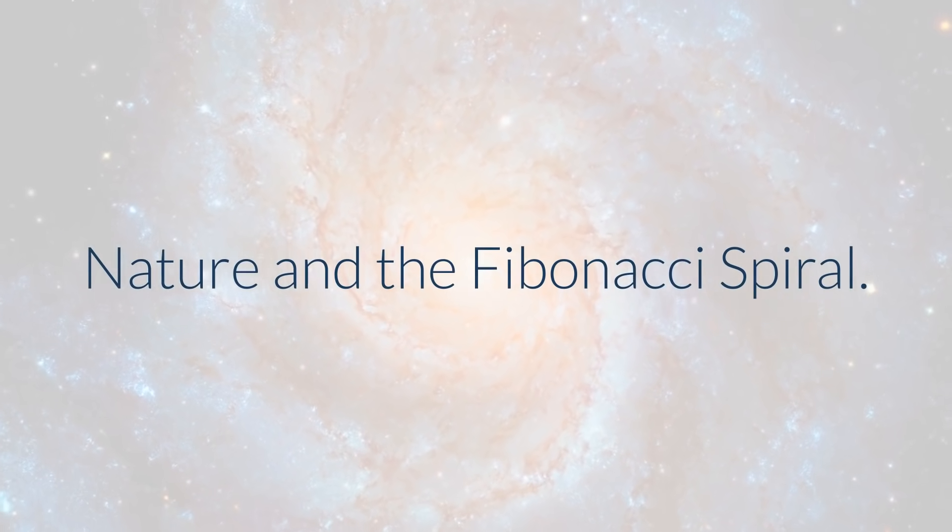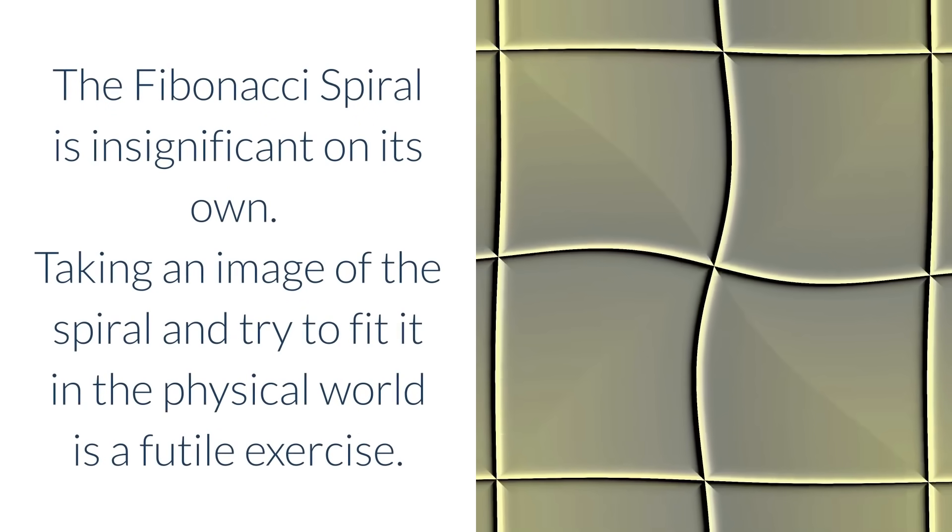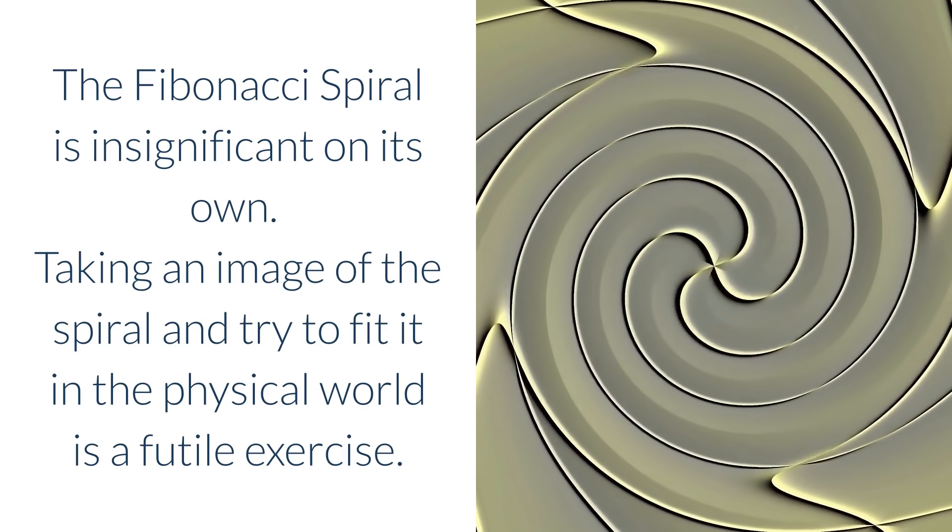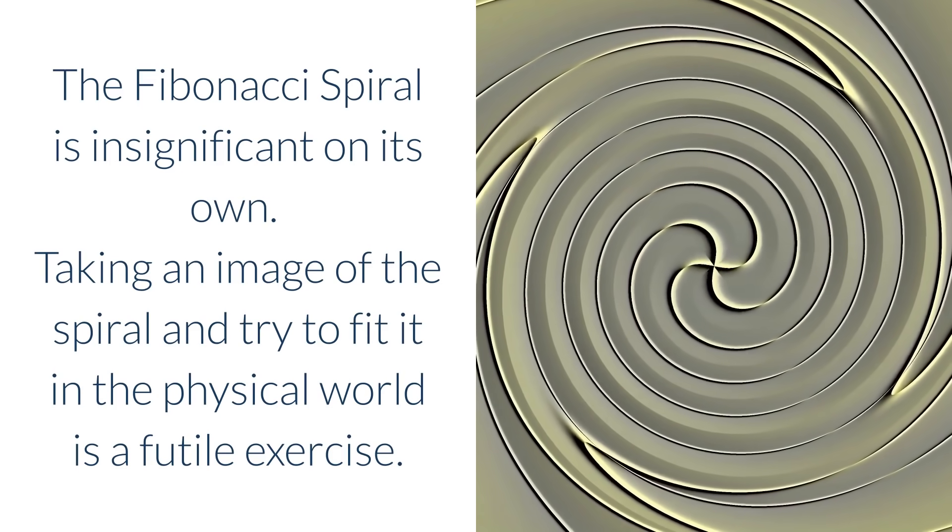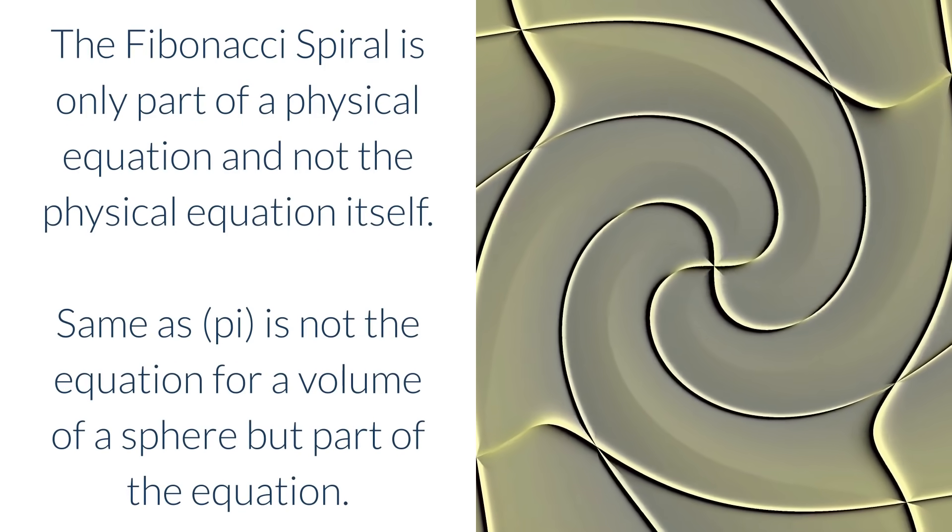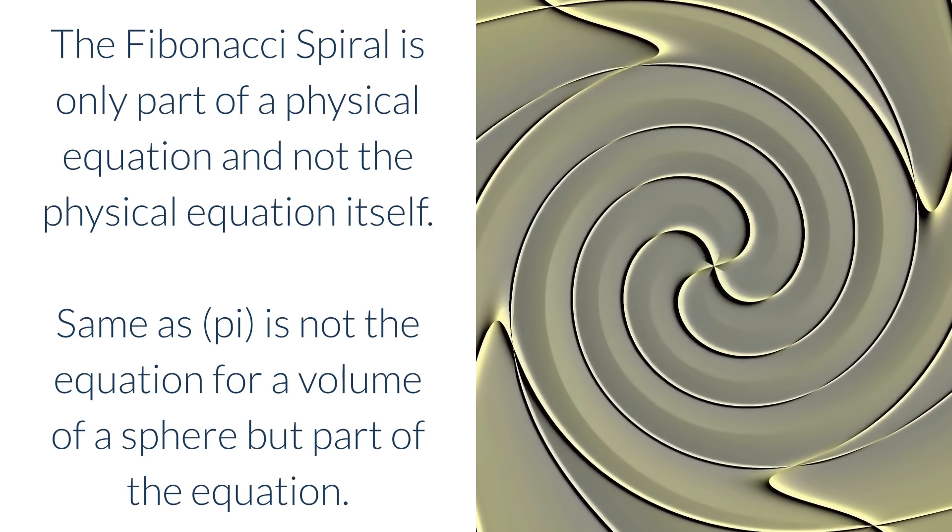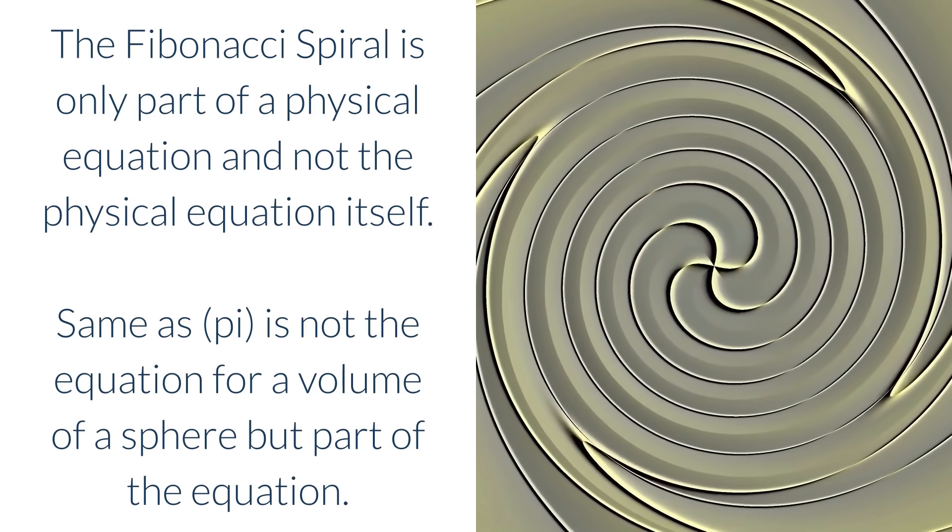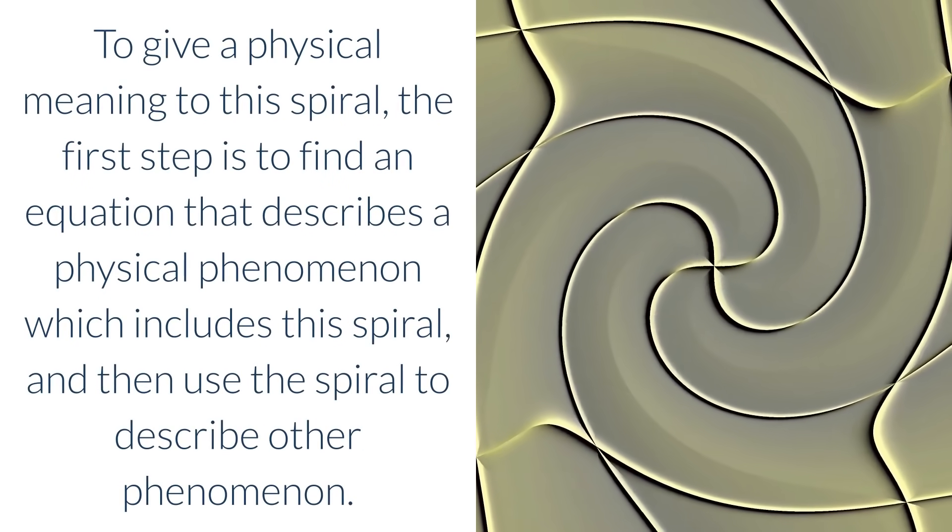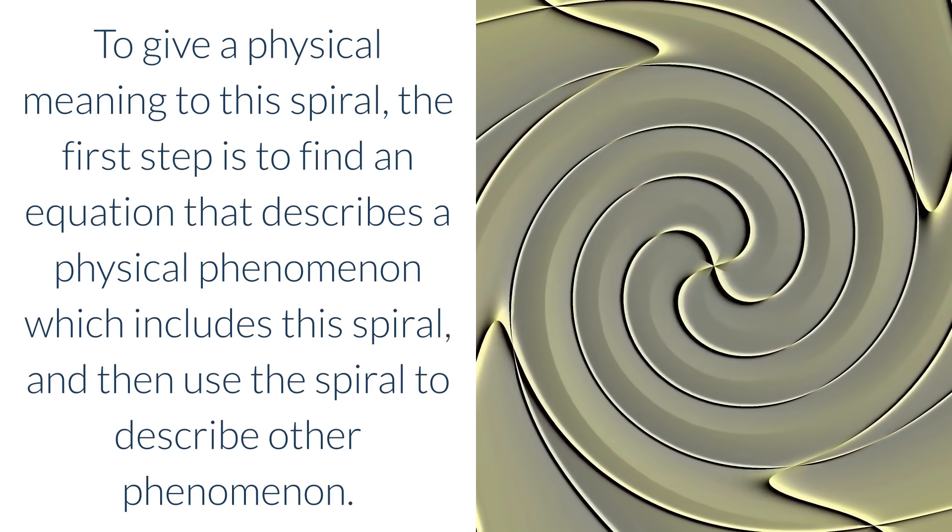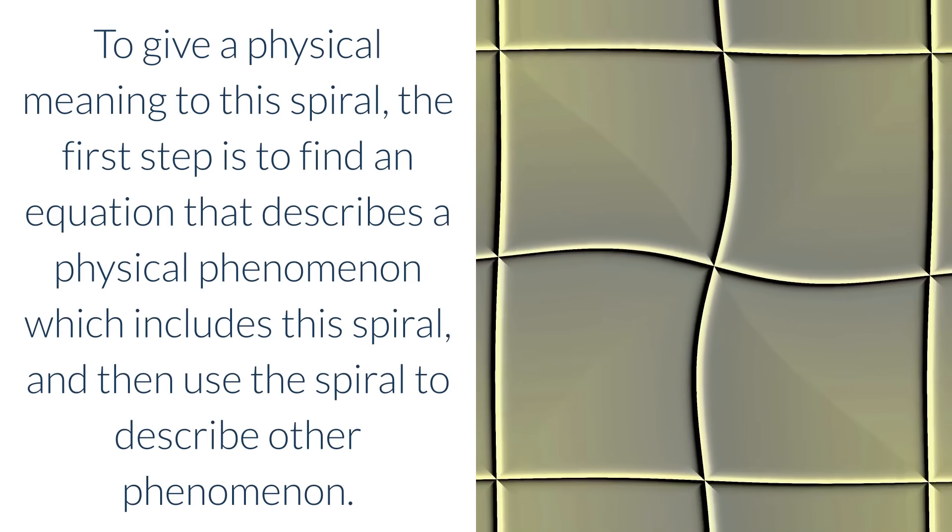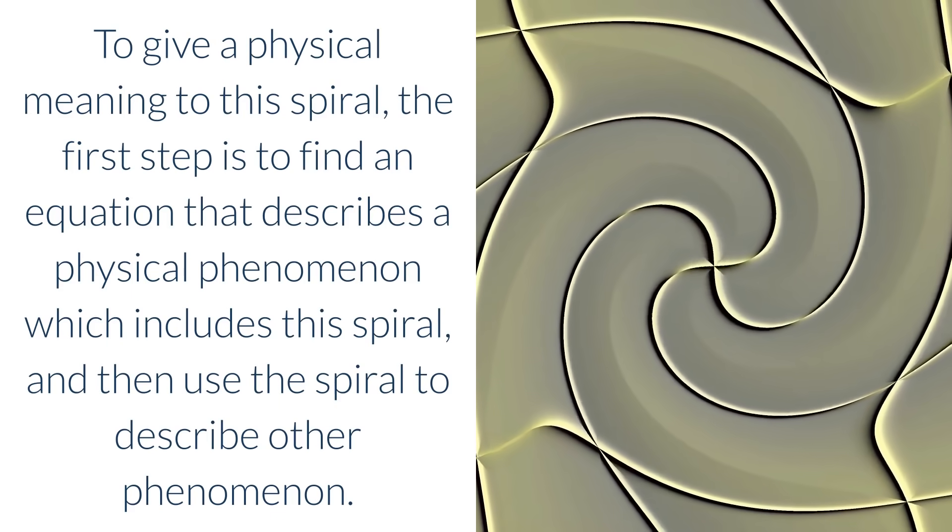Nature and the Fibonacci Spiral. The Fibonacci Spiral is insignificant on its own. Taking an image of the spiral and try to fit it in the physical world is a futile exercise. The Fibonacci Spiral is only part of a physical equation and not the physical equation itself. Same as pi is not the equation for a volume of a sphere but part of the equation. To give a physical meaning to this spiral, the first step is to find an equation that describes a physical phenomenon which includes this spiral, and then use the spiral to describe other phenomenon.